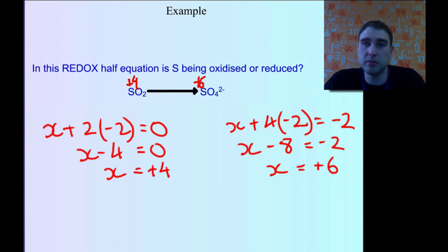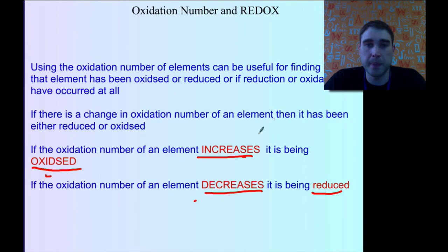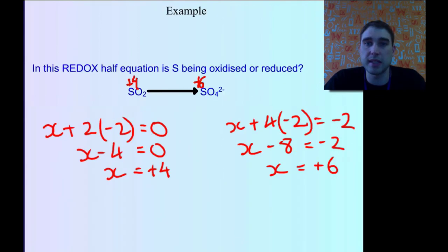Going back to our rule: if the oxidation number increases, then the element is being oxidized. So in this case, we're going from plus 4 to plus 6, which means it's being oxidized. It's getting bigger.